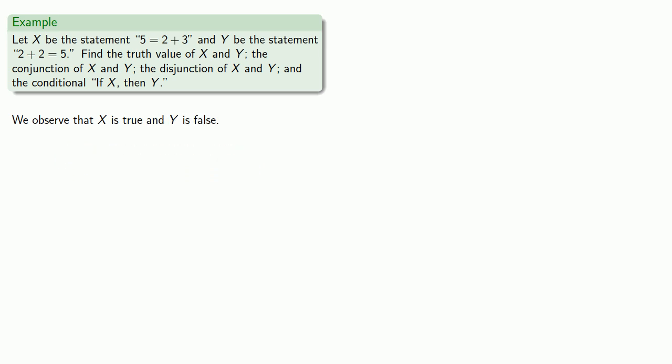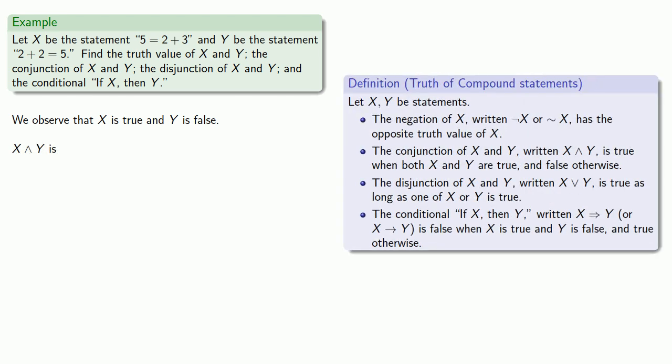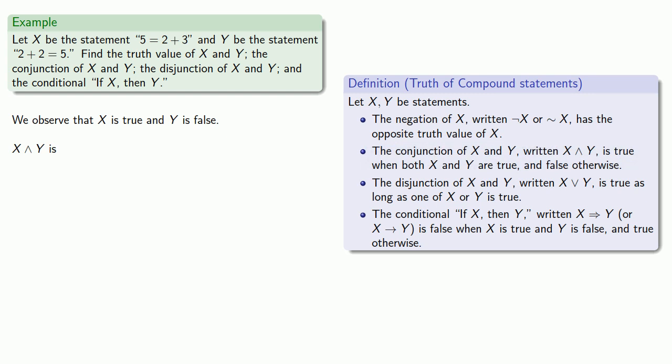The conjunction, written this way, is true when both x and y are true — otherwise it's false. Since only one of them is true, the conjunction is false.